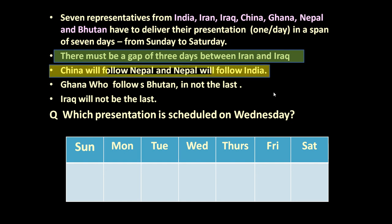Next, China will follow Nepal and Nepal will follow India. So we can highlight this sequence: India, Nepal, China — these three nations will be together in the table. But where exactly they will be placed is still not clear.